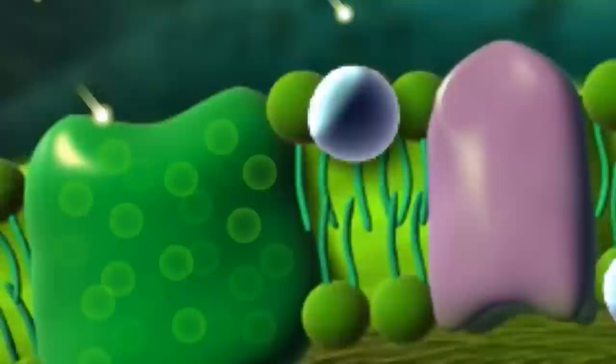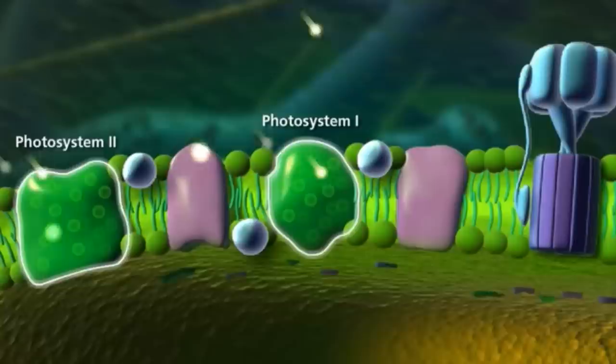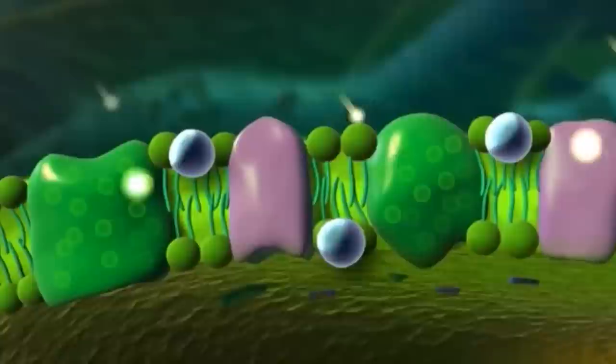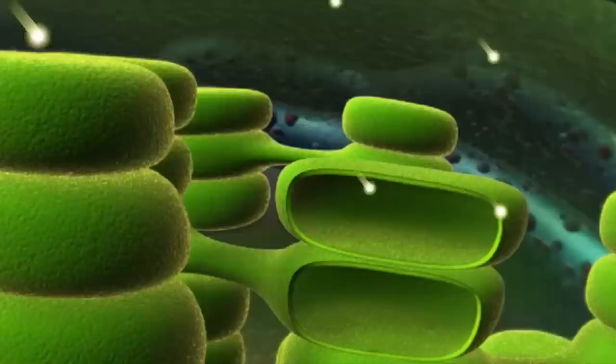Once at the reaction center, the electron creates a permanently separated charge that is essentially energy that can be stored. It's the same thing that makes a fully charged battery such a useful source of power. At that point, the energy is safe and properly stored, ready for use by the plant.